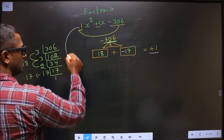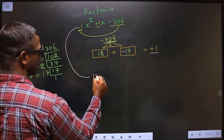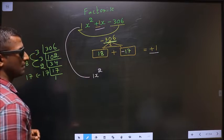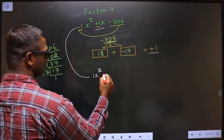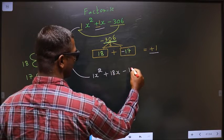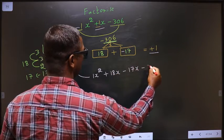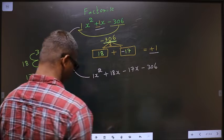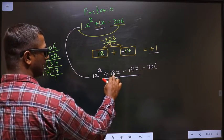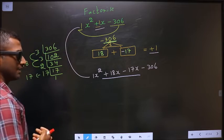Now this will change to: in place of +1x, I will write 18x - 17x. So x² + 18x - 17x - 306. In place of 1x, I have written 18x - 17x.